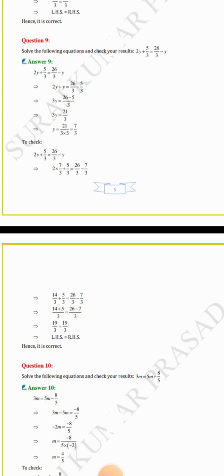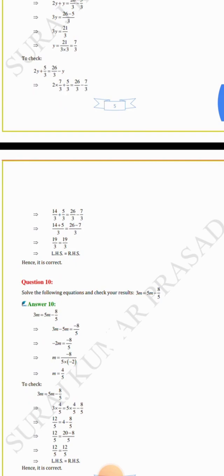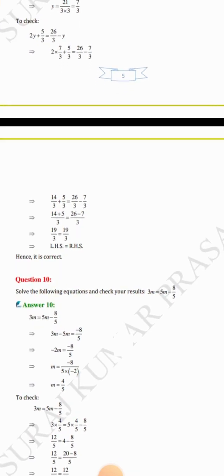To check, substitute y equals 7/3: 2 × (7/3) + 5/3 = 26/3 − 7/3 gives 14/3 + 5/3 = 26/3 − 7/3. Then (14 + 5)/3 = (26 − 7)/3, giving 19/3 equals 19/3. LHS equals RHS, hence it is correct.